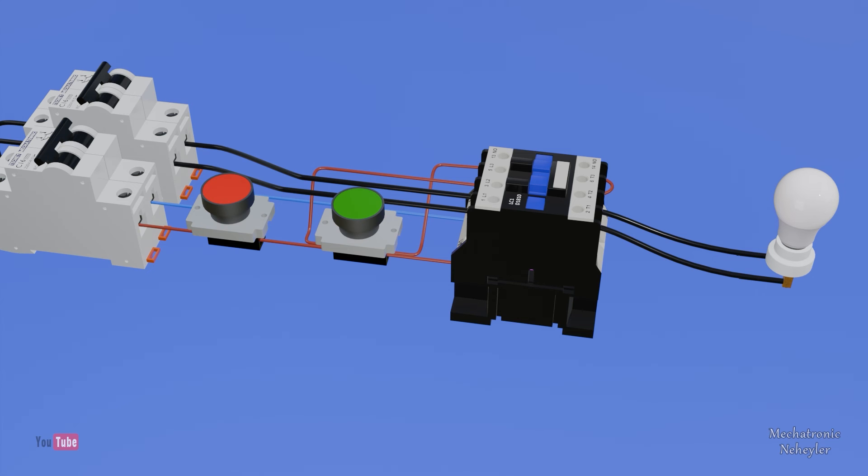Now you can connect a light bulb, an electric motor or any other load to control it independently. Remember that the current that controls the coil is independent of the current that goes to the loads in the power circuit.